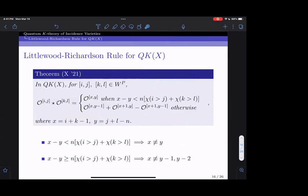In the non-equivariant case, I was able to obtain a Littlewood-Richardson rule which tells us how to multiply two arbitrary Schubert classes. Here chi of i greater than j equals one when i is greater than j and zero when i is smaller than j. This formula makes sense because when this inequality holds, x is never congruent to y mod n, and when the opposite inequality holds, x is never congruent to y minus one or y minus two. This guarantees that in each case the indices on the right-hand side actually live in W^p total. The subtle point is that the converse here is not true.